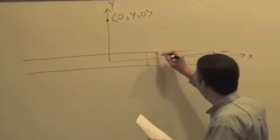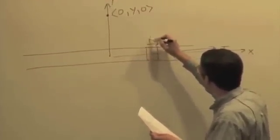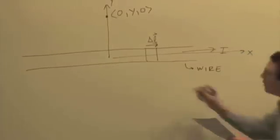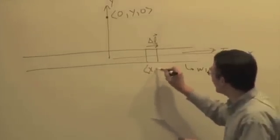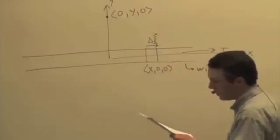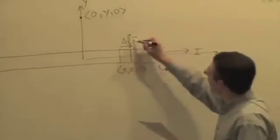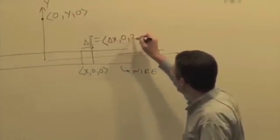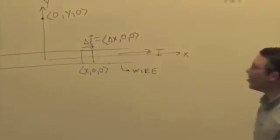And here's a little segment of wire that has a length delta L. And the position is x, 0, 0. And then this delta L vector, which is a vector pointing in the direction of the conventional current, we'll just call the length of that vector delta x. And then it's in the x direction, so it's delta x, 0, 0.